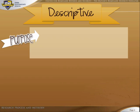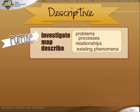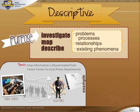Descriptive research focuses on investigating and mapping, describing problems, processes, relationships — especially causal relationships — or other existing phenomena. For example, a thesis that focused on understanding how information is disseminated from a fusion center to local police departments, and where the barriers exist to the flow of information, would fall under this type of research.